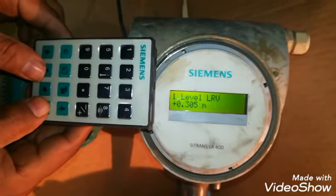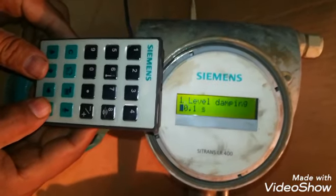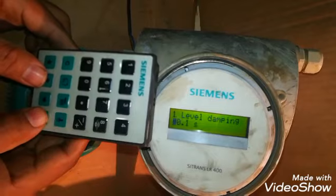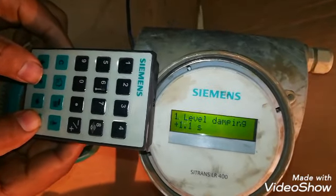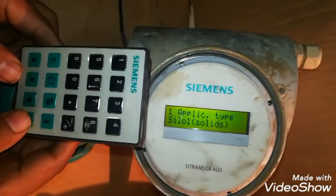Now I will change the LRV. I want 4 milliamps at 0 meter. I will make it 1 second damping.